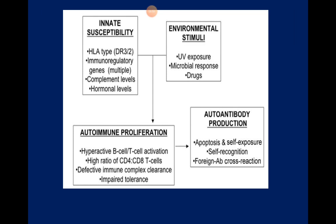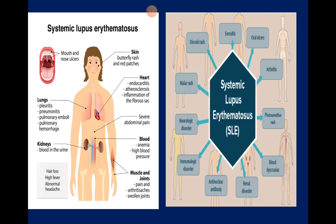The mechanism by which SLE develops is not entirely known. Most theories are around the theme of interaction between genetic susceptibility and environmental factors that result in autoimmune proliferation and therefore autoantibody production causing inflammation. It is very important to be aware of the systemic nature of SLE and to realize how the organs get affected.